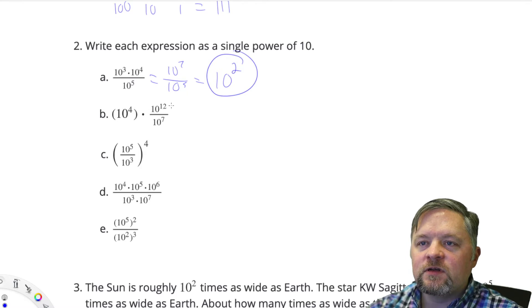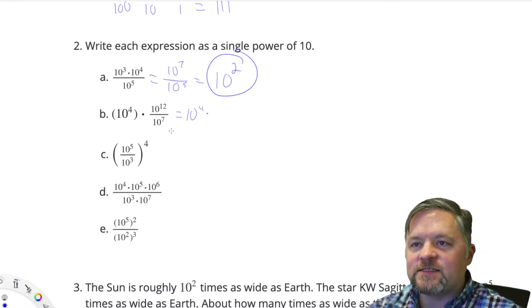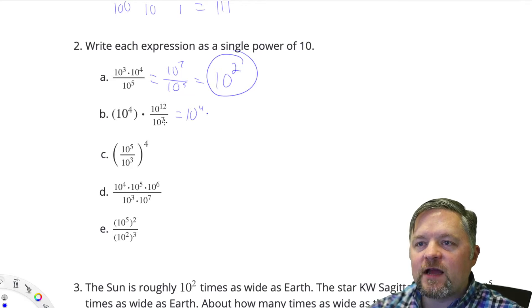On this one, let's deal with this stuff first. So that's 10 to the 4 times 10 to the 12 divided by 10 to the 7. 12 subtract 7 is 5, so 10 to the 5. 10 to the 4 times 10 to the 5 means we can add those. 10 to the 9.